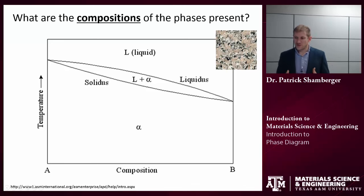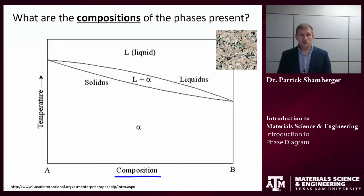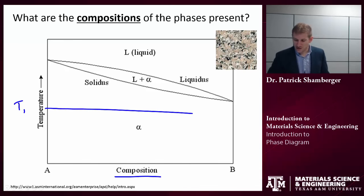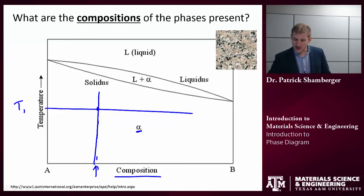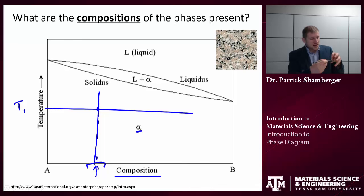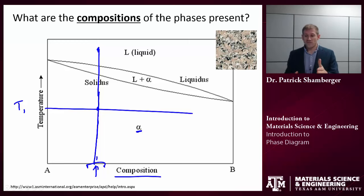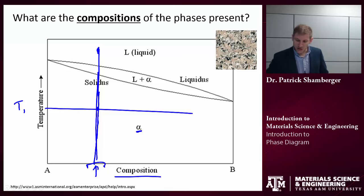What are the compositions of the phases present? Composition is shown on the horizontal axis, so I drop down and read that value off the horizontal axis. Going back to the T1 case, this is straightforward — I only have one phase, and the composition of that phase is the composition of the overall system. This makes sense: if there's only one phase in the system, its composition must match the overall system composition. The same applies in the liquid region — again, a one-phase region, so the composition of that phase equals the composition of the overall system.